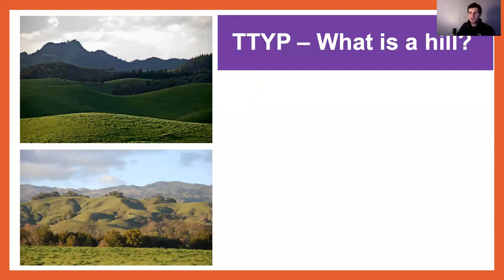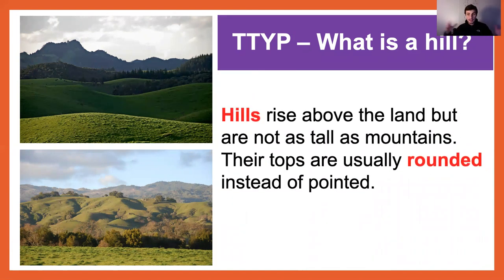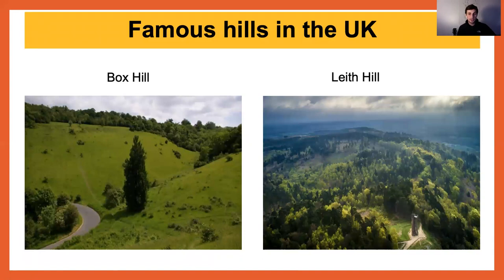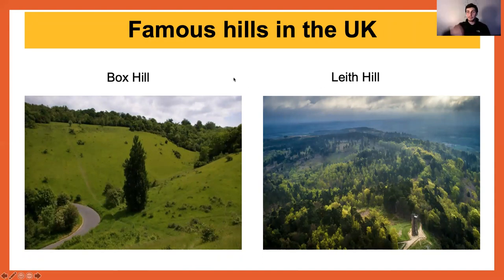Pause this video — we just spoke about mountains, but what is a hill? Hills simply rise above the land but are not as tall as mountains, and their tops are usually always rounded instead of pointed. The main difference is they're not higher than 600 metres; once it gets above 600 metres, it gets into the area of being a mountain. Famous hills we've covered this term in the UK include Box Hill and Leaf Hill — areas that rise high above the land.